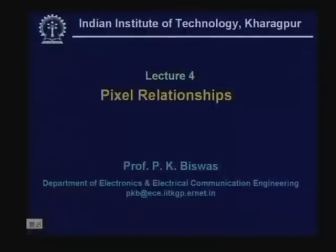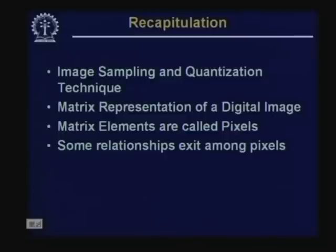Hello, welcome to the video lecture series on digital image processing. Till the last class, we have talked about the image digitization process and we have seen that there are two steps involved for digitization of an image. The first step is image sampling, in which case instead of taking intensity values at every possible location, we take pixel values at some discrete locations in the two-dimensional space. This is the process we call image sampling.